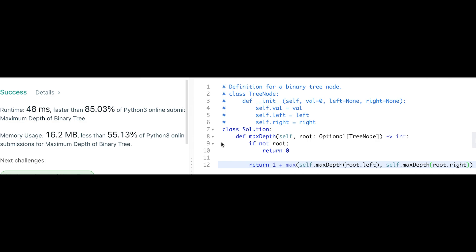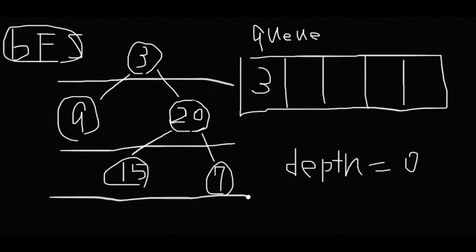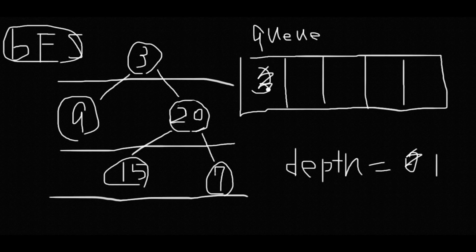Now let me explain how to solve this with breadth-first search. I'll draw the same tree and use a queue initialized with the root node 3. Basically we iterate through all nodes level by level. Every time we pop the first node from the queue, check if it has children, and if so add them to the queue. Before iterating each level, add 1 to depth. Pop node 3, find children 9 and 20, and add them to the queue.